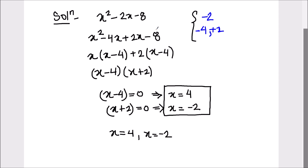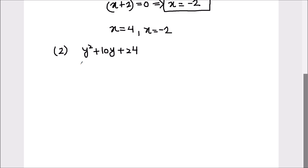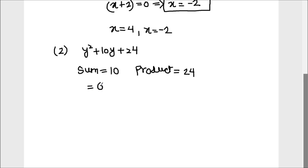Let's take one more example and find the zeros of y squared plus 10y plus 24. Here too we are going to find the factors by splitting the middle term. The sum of the two numbers should equal 10 and the product should equal 24. The two numbers will be 6 and 4 because 6 plus 4 equals 10 and 6 times 4 equals 24.